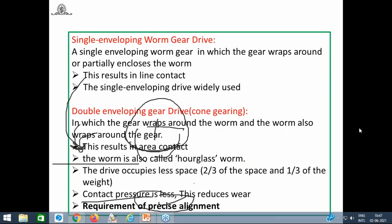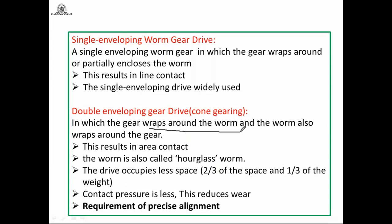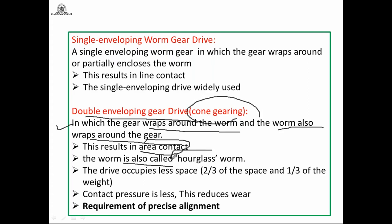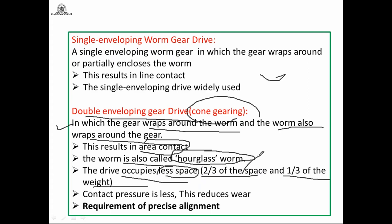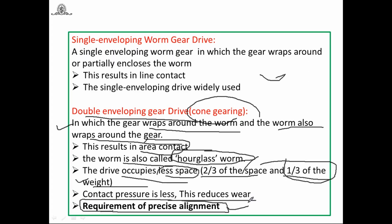In double enveloping, both the worm wheel wraps around the worm and the worm wraps around the gear, resulting in area contact. This worm is also called an hourglass worm or cone gearing. The advantage is less space — about one-third the weight of other types — and reduced contact pressure, which minimizes wear. The limitation is the requirement for precise alignment.